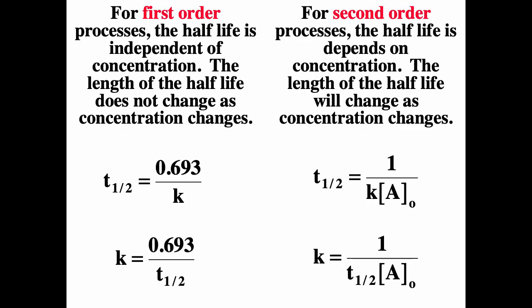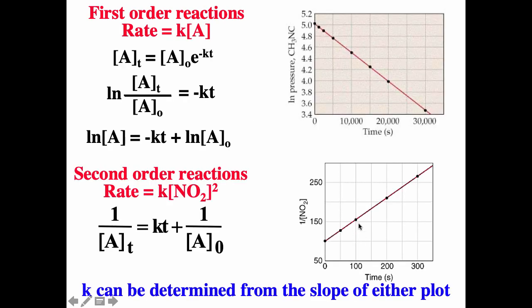Please don't confuse first order and second order processes. First order processes have a true half-life that does not depend on concentration. If you try to define a half-life for a second order process, you'll find it does depend on concentration, so it doesn't really make sense to talk about half-life for second order processes. To summarize: for first order, the natural log of concentration as a function of time is a straight line; for second order, one over the concentration as a function of time is a straight line.